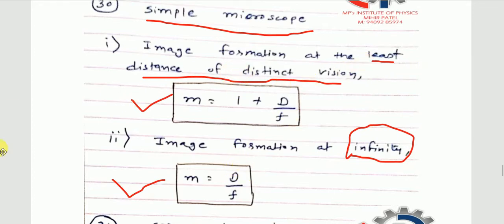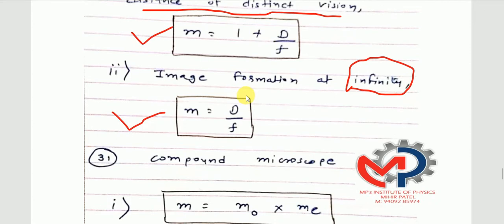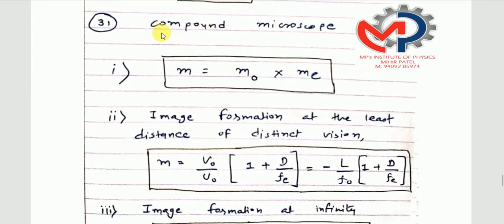Least distance of distinct vision means: according to the capacity of the human eye, the minimum distance required to see a clear image is 25 cm. You need to recall that concept. So for simple microscope, you have recalled the 25 cm point and these two equations.